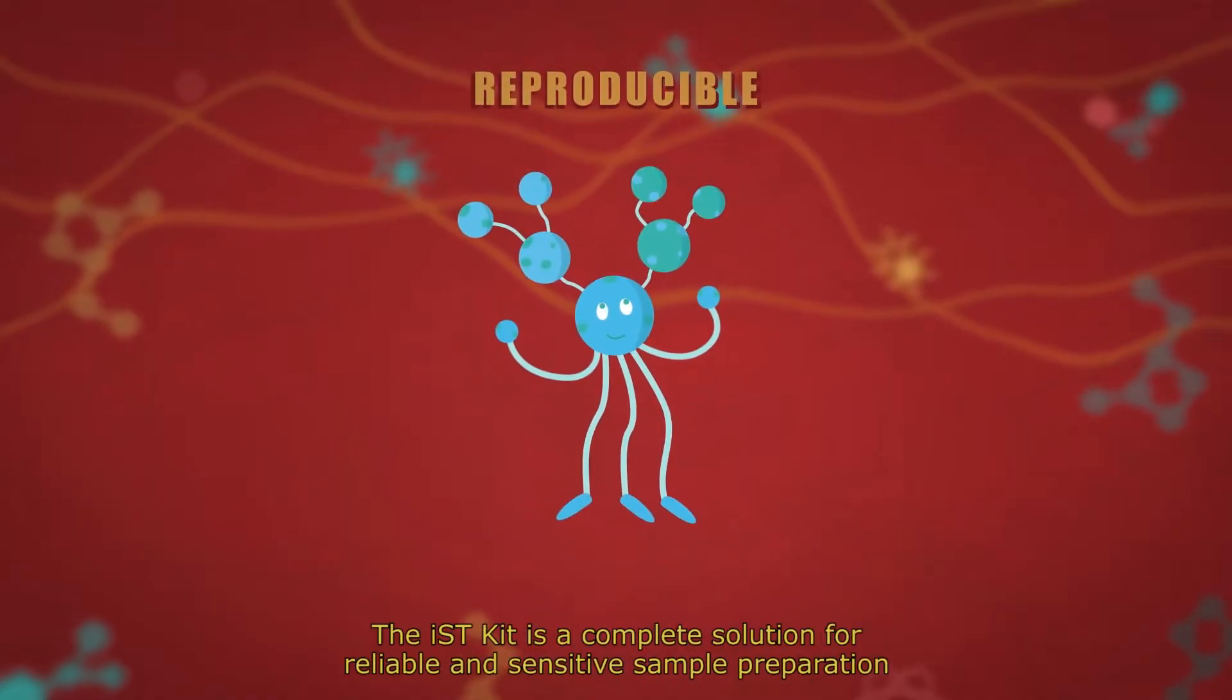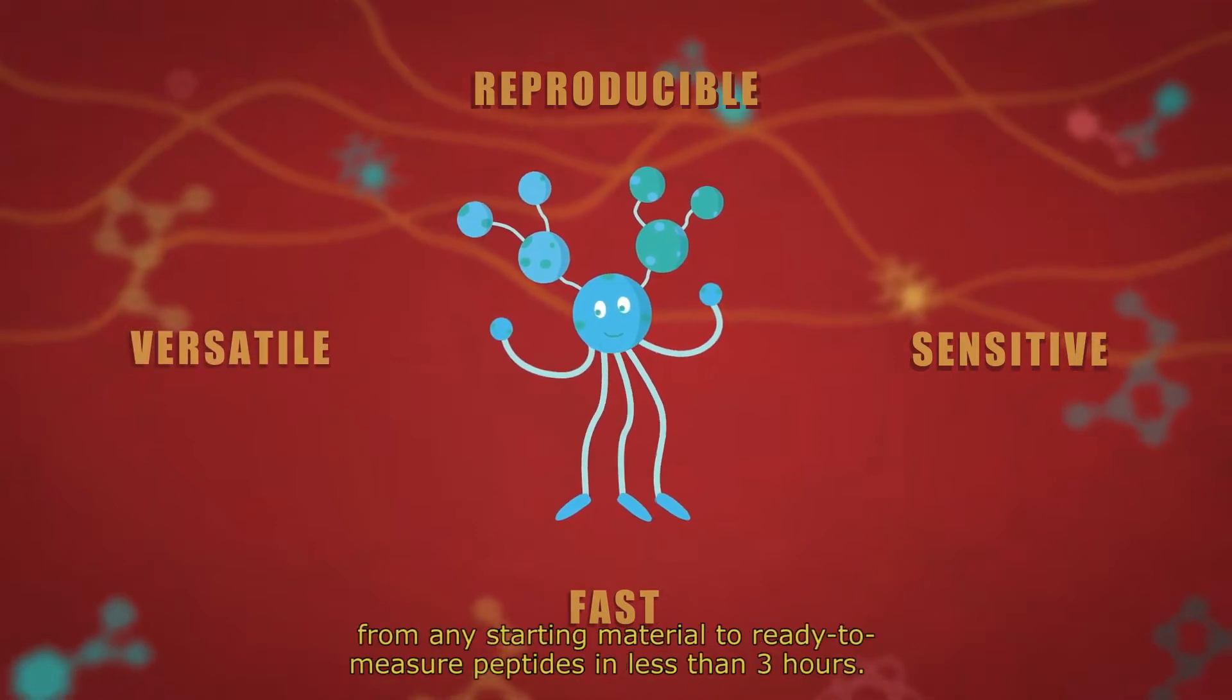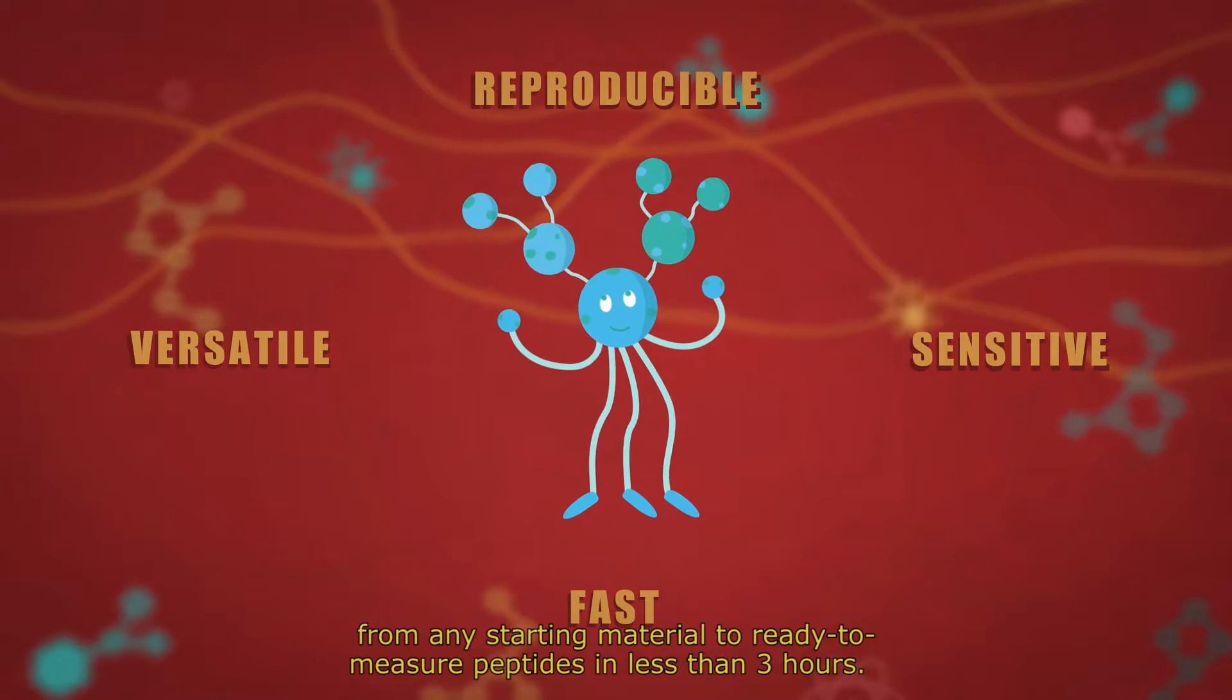The IST Kit is a complete solution for reliable and sensitive sample preparation from any starting material to ready-to-measure peptides in less than three hours.